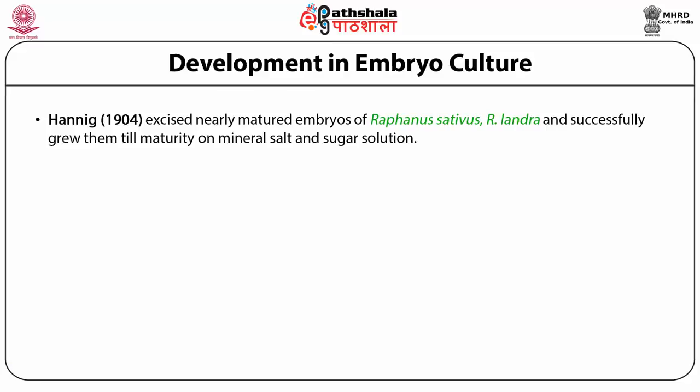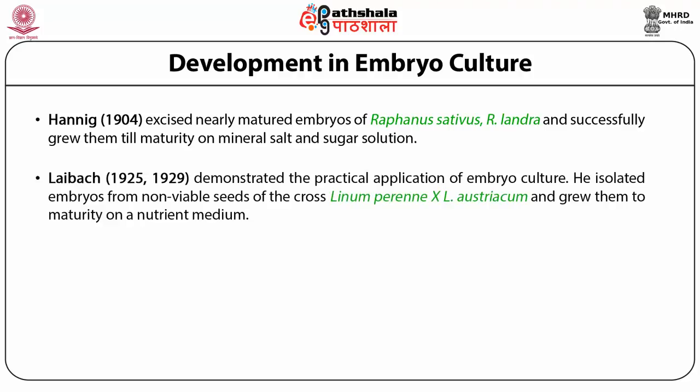Hannig, way back in 1904, excised nearly mature embryos of Raphanus sativus and Raphanus landra and grew them to maturity on artificial media. These were not hybrids — these embryos would have otherwise grown as well. Then came another landmark discovery by Laibach, who demonstrated the practical application of embryo culture. He isolated embryos from non-viable seeds which was a cross between two Linum species and was able to grow them to maturity on artificial media — a hybrid which otherwise would not have been possible in nature.